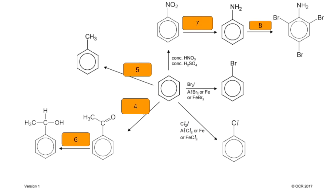Number four: benzene to an acyl group on the benzene ring — acylation of benzene. For this specific one you'd react it with ethanoyl chloride in the presence of an AlCl3 catalyst. So for acylation you react your benzene with the relevant acyl chloride with that catalyst. Number five: alkylation — in this case we're putting a methyl group on the benzene ring, so you'd react it with chloromethane and again it needs an AlCl3 catalyst.